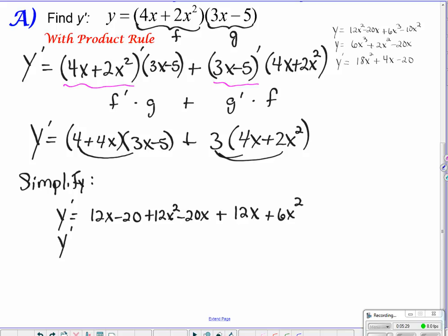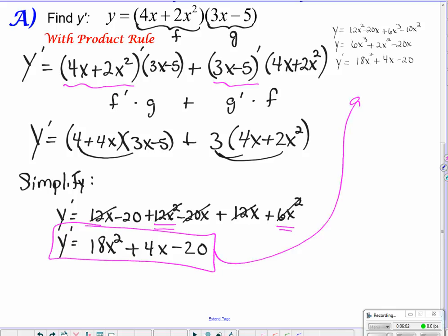We've got the derivative actually solved here. We just need to simplify. That's going to look like y prime equals 12x minus 20, plus 12x squared and minus 20x. Sending 3 through, we'll have 12x plus 6x squared. Now, adding like terms, we end up with 18x squared, and then I've got 12x and 12x, that makes 24x, take off 20, and we're at positive 4x. And the minus 20 remains. There is our answer, the derivative using the product rule.